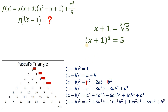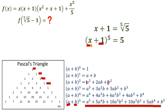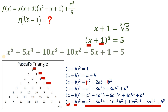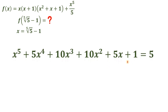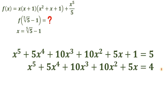If we let x equal a and 1 equal b, we can use this expansion to fully expand the left-hand side of our equation. We get x to the 5th power plus 5x to the 4th power plus 10x cubed plus 10x squared plus 5x plus 1. Now, subtracting 1 from both sides, the right-hand side becomes 4. Since 5, 10, 10, and 5 are all multiples of 5, we divide all terms by 5.